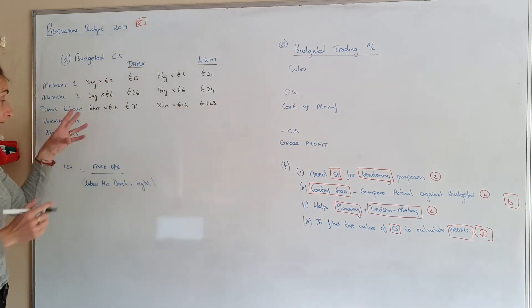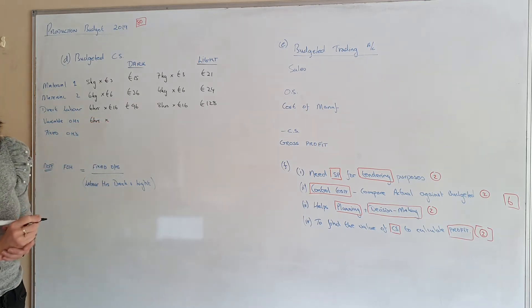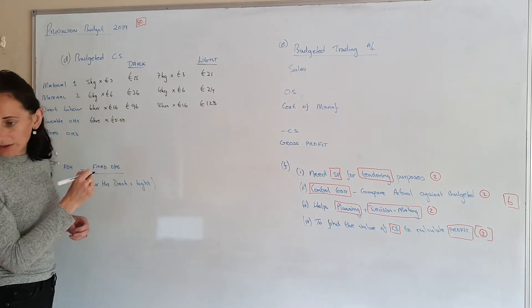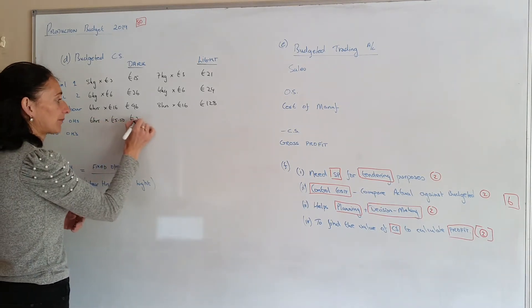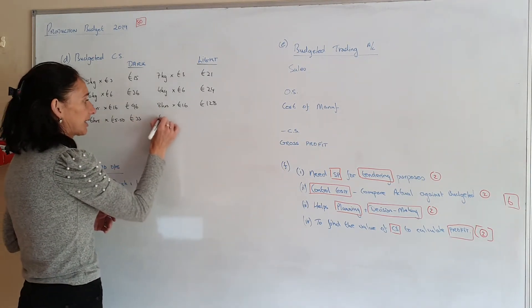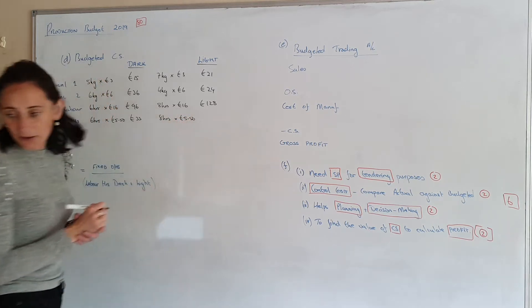Variable overheads again are based on the labour hours. 6 hours but the variable overhead rate is €5.50. So that gives me €33. And in light we need to work on it, sorry I can just take it from here. 8 hours by €5.50. So that gives me €44.